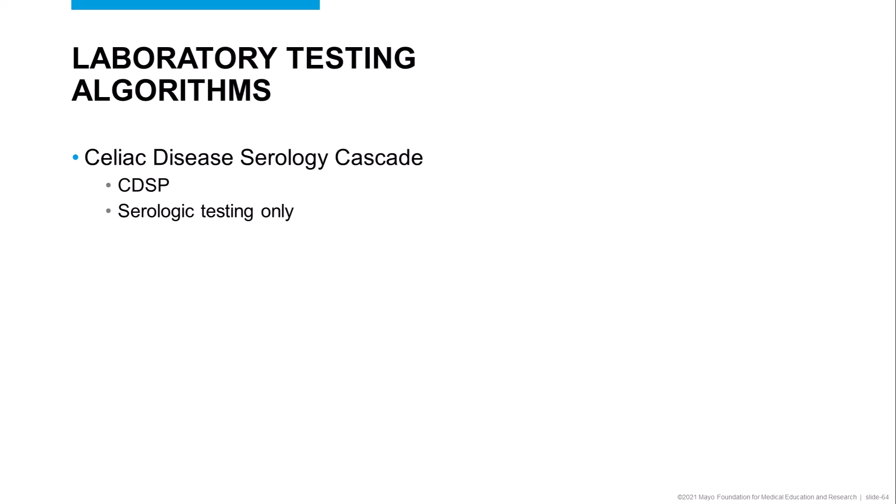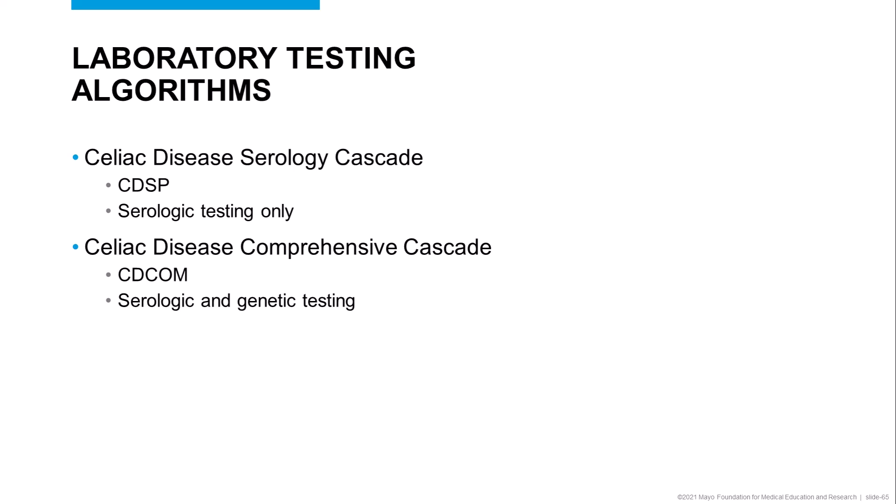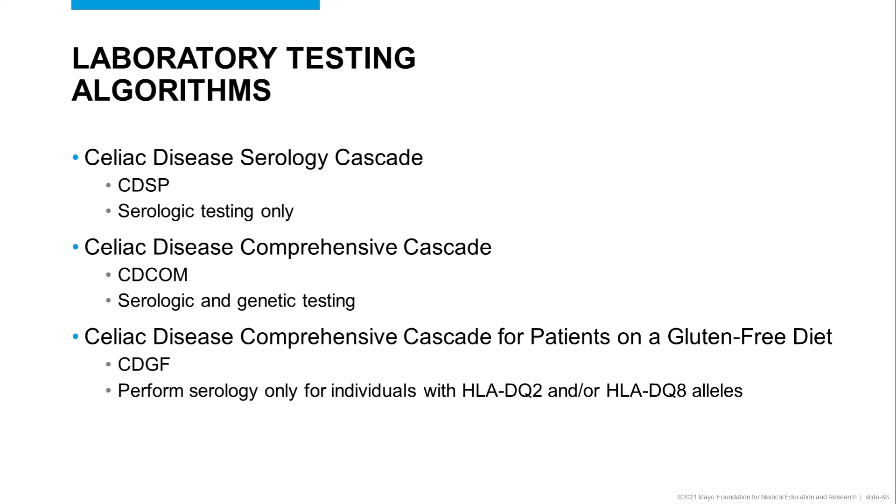Given the variety of tests available for the diagnosis of celiac disease, choosing the most appropriate tests for a given patient and interpreting the results can be a challenge. The clinical labs at Mayo, working closely with our GI colleagues, have established several algorithms to aid in the diagnosis of celiac disease. The first is the celiac disease serology cascade, or CDSP, applicable to most patients and incorporating a reflex approach. The second is the celiac disease comprehensive cascade, CDCOM, which includes both serologic and genetic testing. Then we have the celiac disease comprehensive cascade for patients on a gluten-free diet, or CDGF, which only performs serology in the context of a positive genetic test.